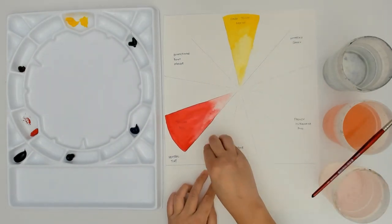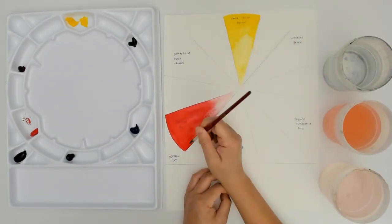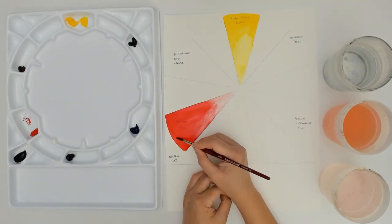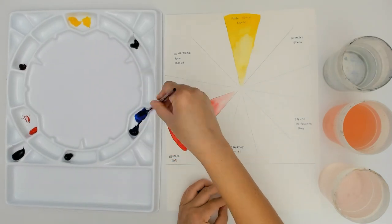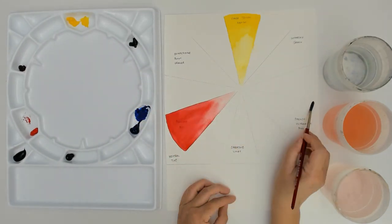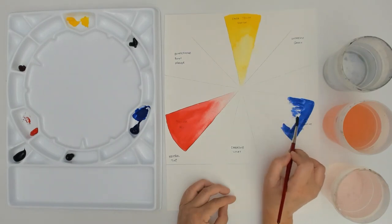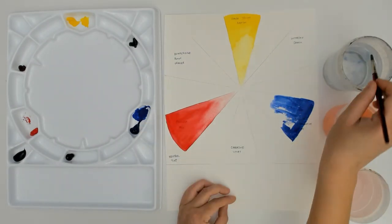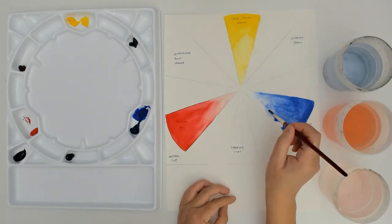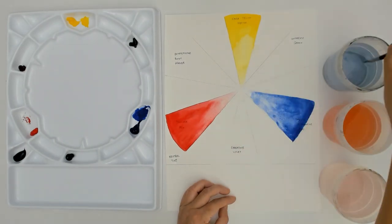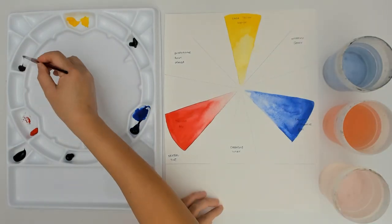I accidentally splattered on the side so I'm just grabbing that with a paper towel to erase it. I like having a part of the well be empty of the tube paint so that I can use that area to mix the paint with water.